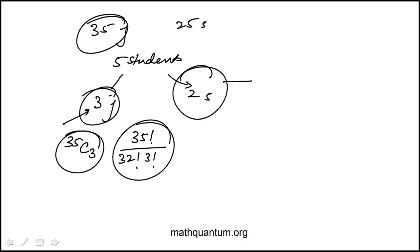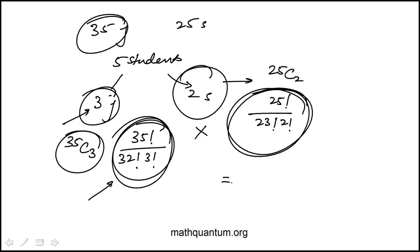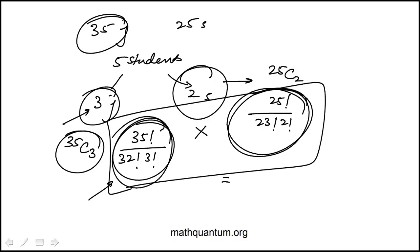We do the same thing for the seniors — we have to select 2 without consideration of order. That's going to be 25 factorial over 23 factorial times 2 factorial. The total number of arrangements applies the multiplication principle for counting: this product gives the total number of different committees that can be formed, and that is the same as answer choice A.